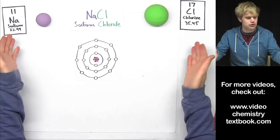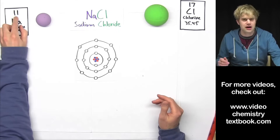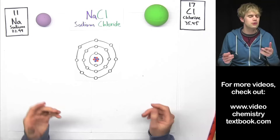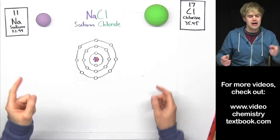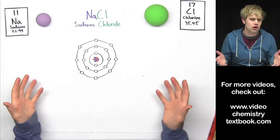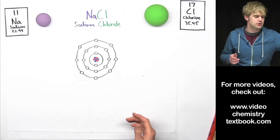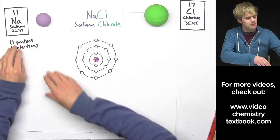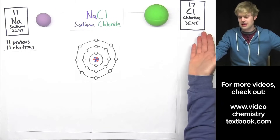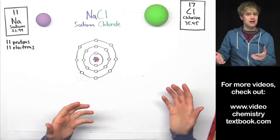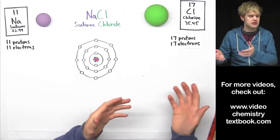First thing we've got to do is find out how many electrons there are in these two atoms. Sodium, you look it up on the periodic table, it's got this 11 here. That means it has an atomic number of 11 — there are 11 protons in sodium. Now remember, when ionic bonding starts, these atoms are not yet ions; they don't have a charge, they're neutral. So there are 11 protons and also 11 electrons in a sodium atom. The same thing is true with chlorine — it has an atomic number of 17, so 17 protons and 17 electrons.